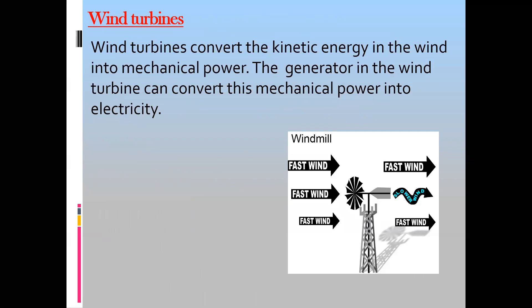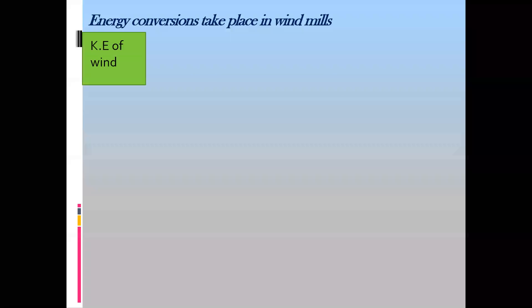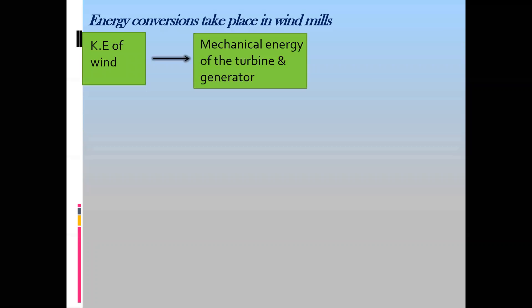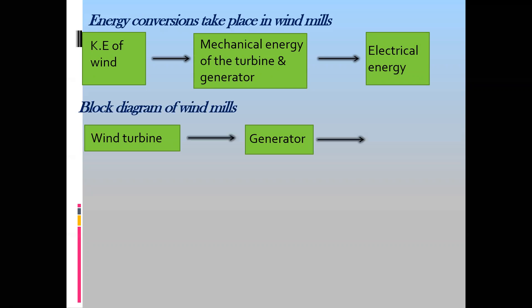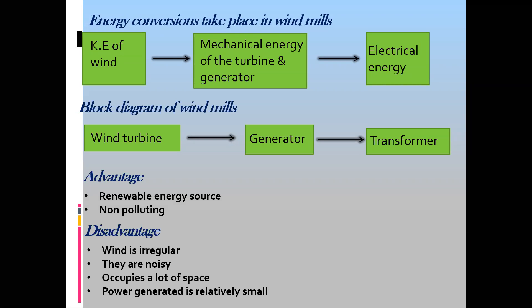For wind energy, the energy change is: kinetic energy of wind changes to mechanical or kinetic energy of a turbine and generator, which produces electrical energy. The block diagram uses a wind turbine, generator, and transformer - the purpose of the transformer is for power transmission. There are advantages and disadvantages of windmills or wind power stations.